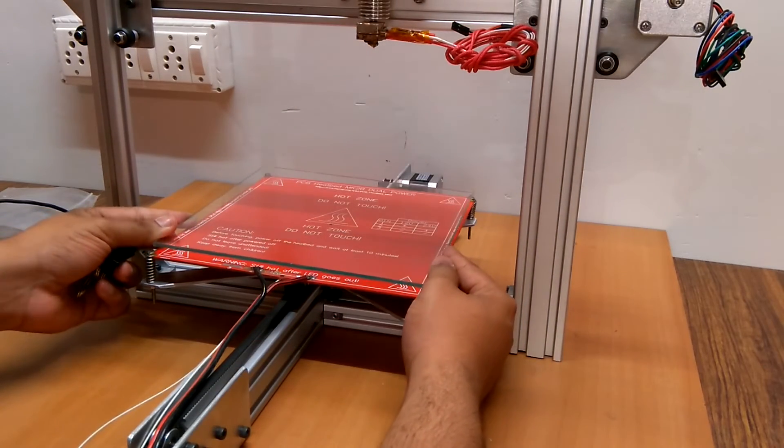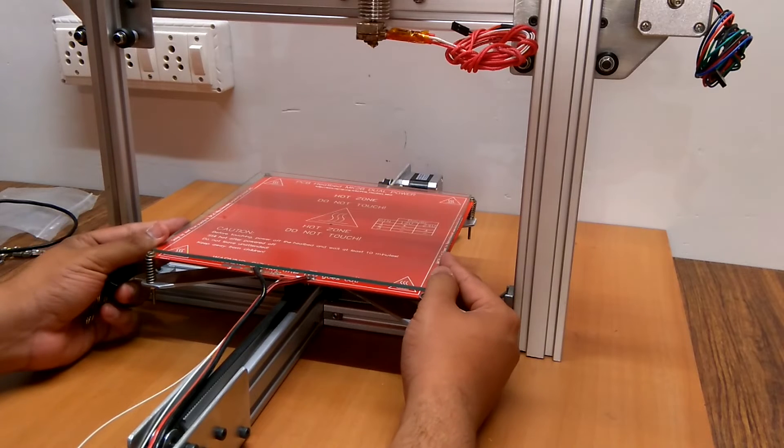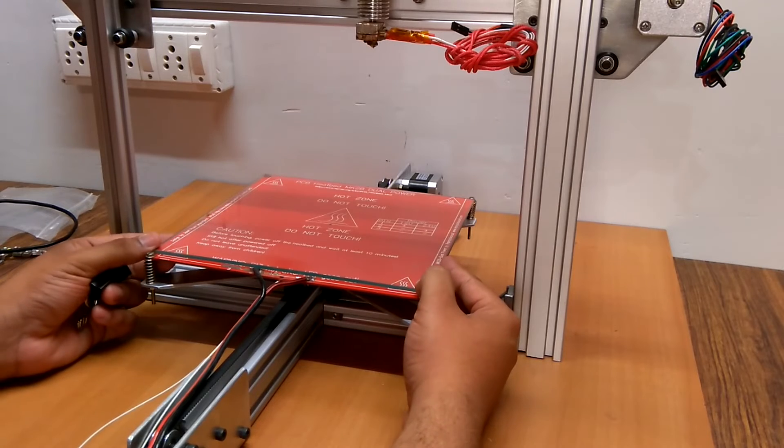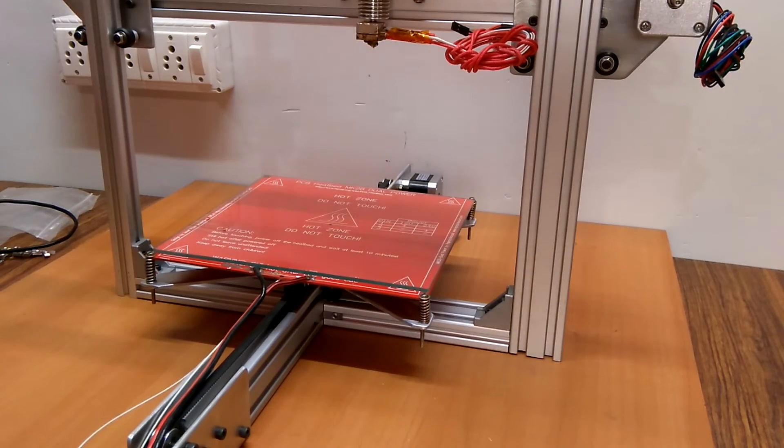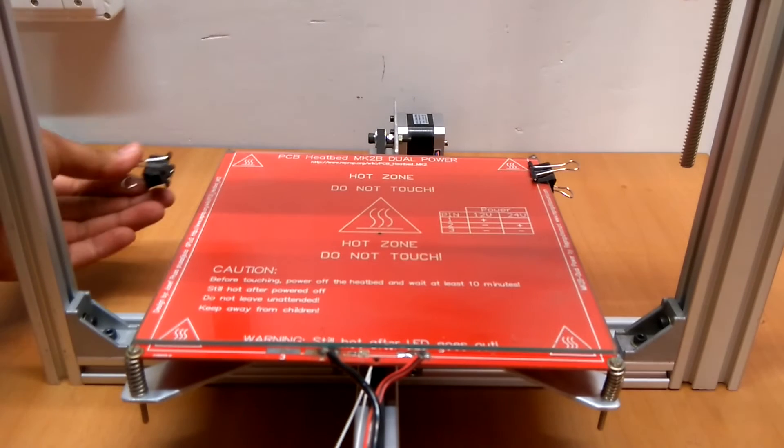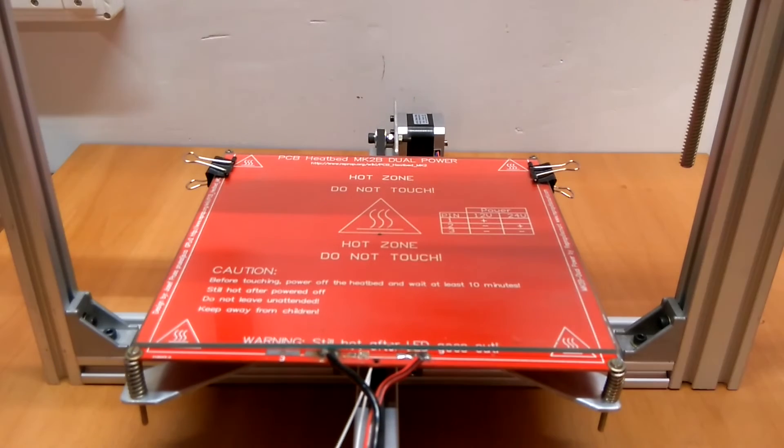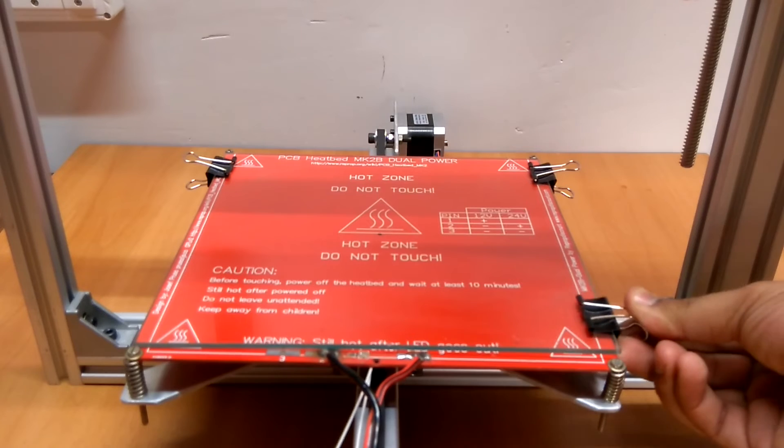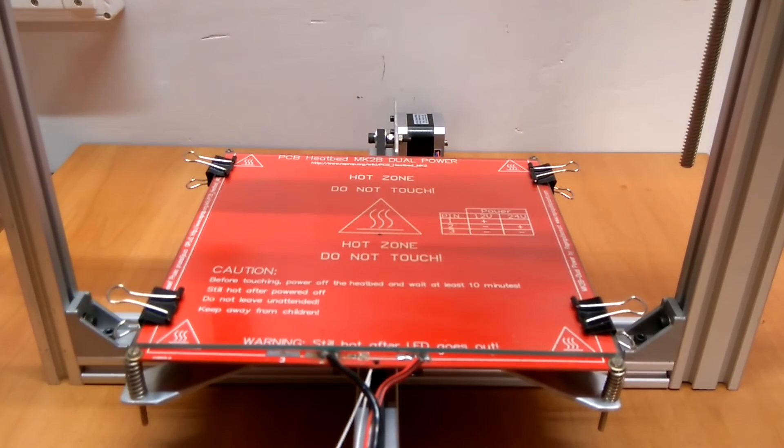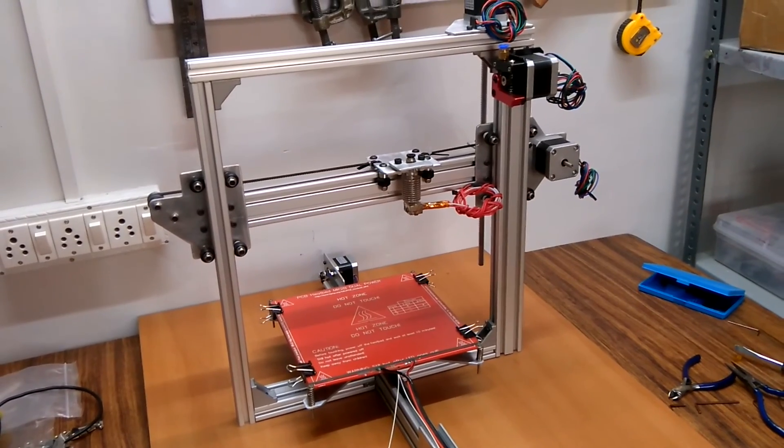I finally placed the borosilicate glass bed on it and secured it with stationary clips. And thus the mechanical build of the printer was complete.